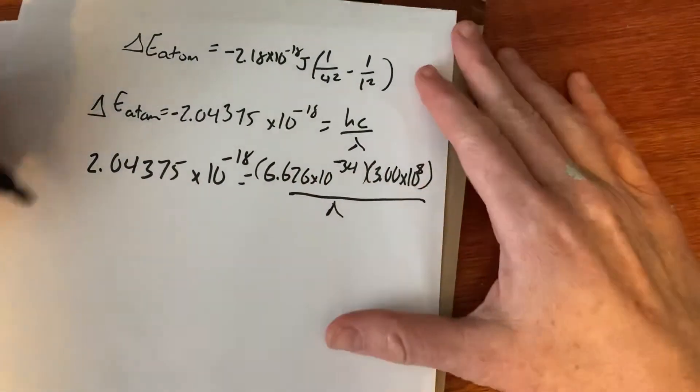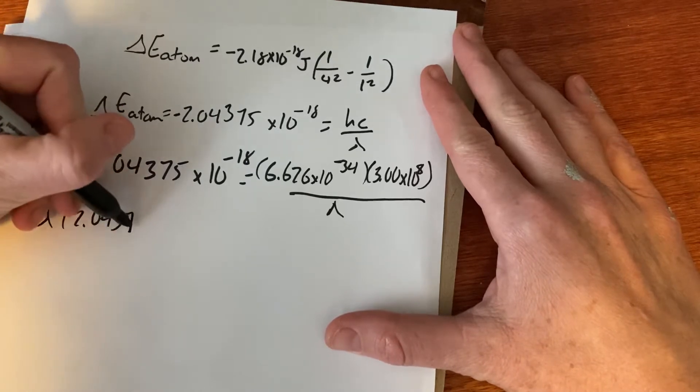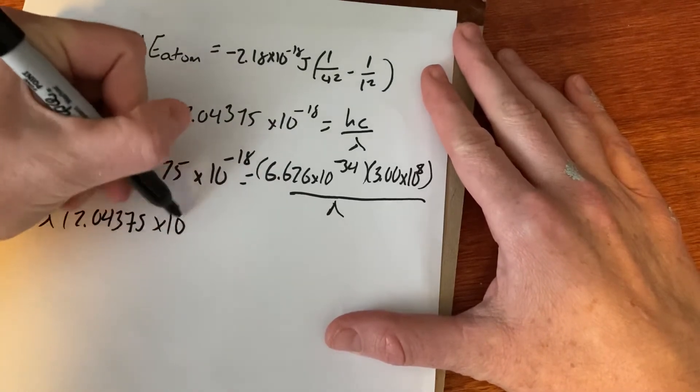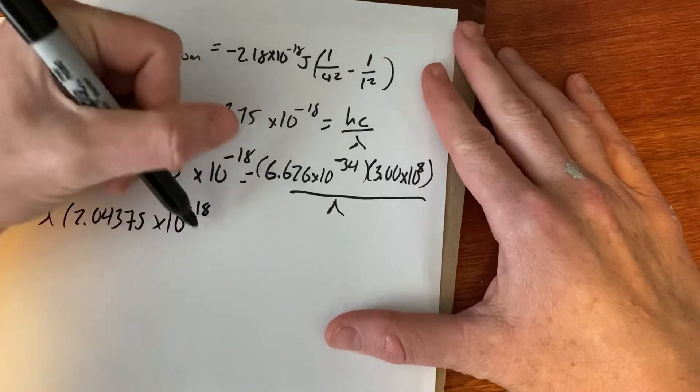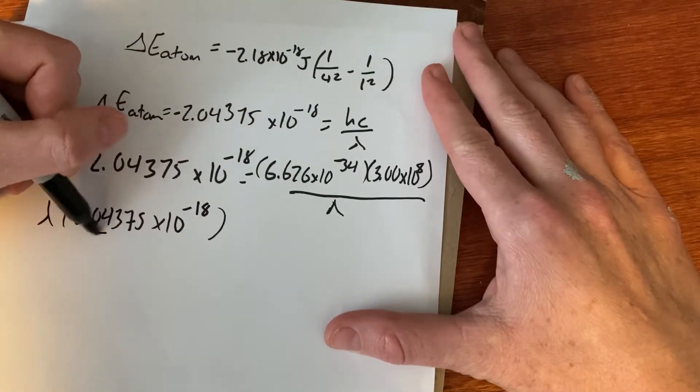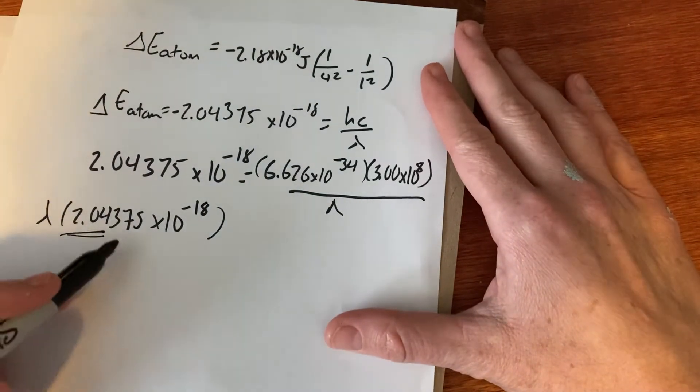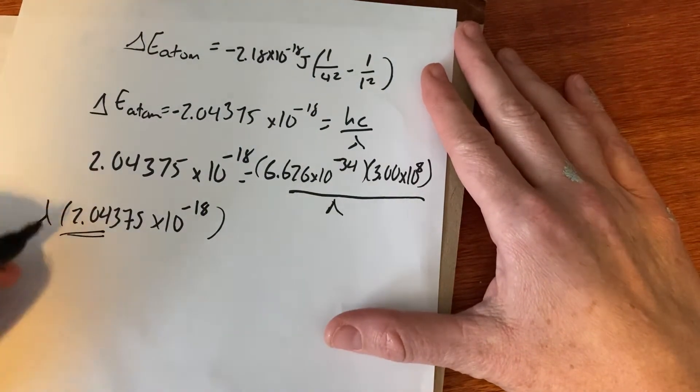Now we got to get lambda on one side, which I think you did. So we got lambda times 2.04375 times 10 to the negative 18, where I'm guessing we got slightly off is the fact that this place right here. I'm guessing maybe you just used 2.04 and didn't use this extra 375. And that ends up making a difference when you're looking at significant figures.